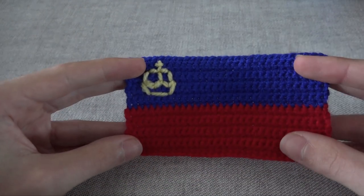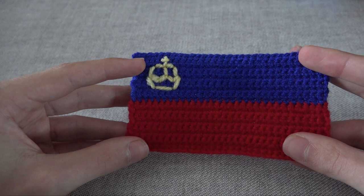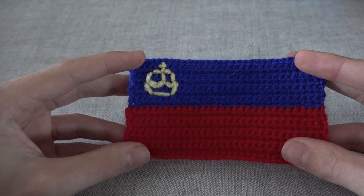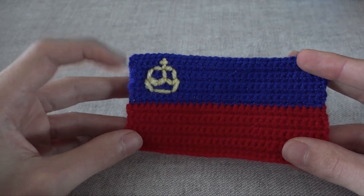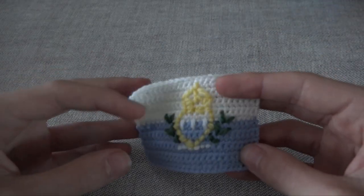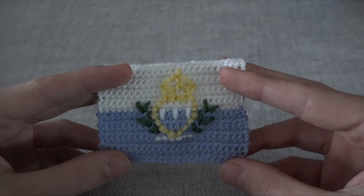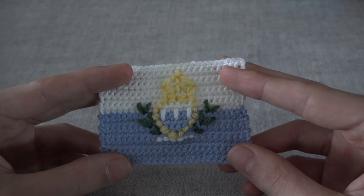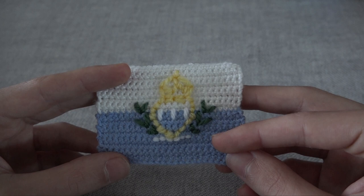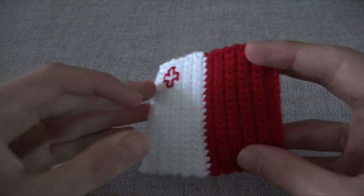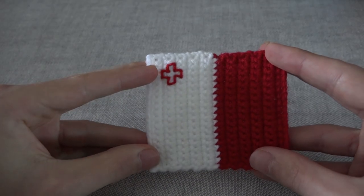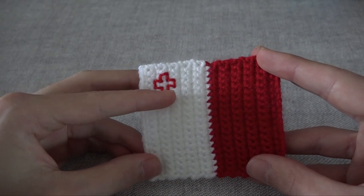Then comes the flag of Liechtenstein, which is a bit easier than the last couple of flags with the big crests, because it has such a small crest. Then comes the flag of San Marino, which was also a bit of a challenge, but I think it turned out pretty okay. Then definitely the easiest one, the flag of Malta, with just a little cross in the corner. Those were all the flags I made in August.